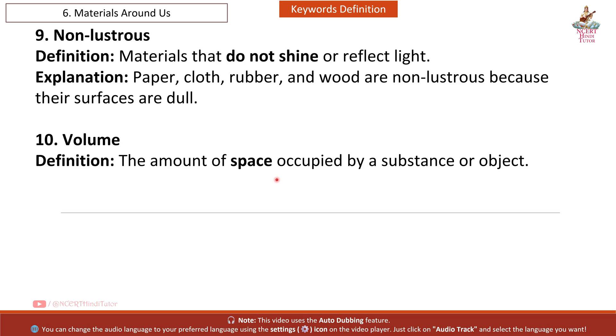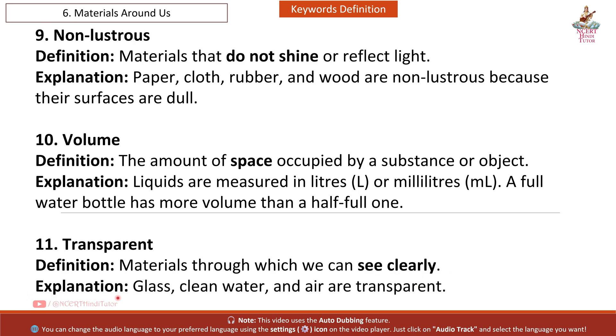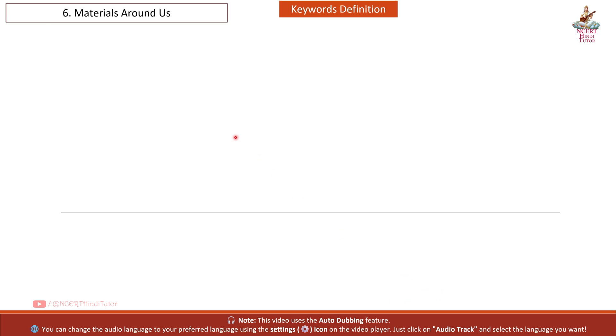Ten: Volume. Definition: the amount of space occupied by a substance or object. Explanation: liquids are measured in liters or milliliters. A full water bottle has more volume than a half full one. Eleven: Transparent. Definition: materials through which we can see clearly. Explanation: glass, clean water and air are transparent.